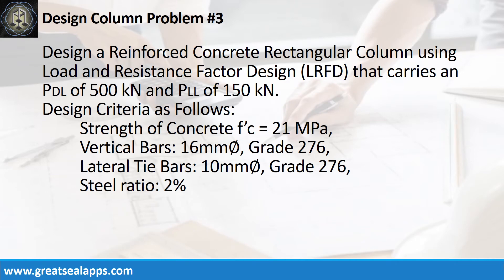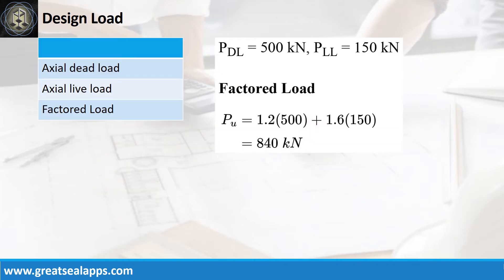Design a reinforced concrete rectangular column using load and resistance factor design that carries an actual dead load of 500 kN and actual live load of 150 kN. Design criteria: strength of concrete, 21 MPa; vertical bars, 16 mm bar, grade 276; lateral tie bars, 10 mm bar, grade 276; steel ratio, 2%. The column carries an actual dead load of 500 kN and actual live load of 150 kN, for a factored actual load of 840 kN.